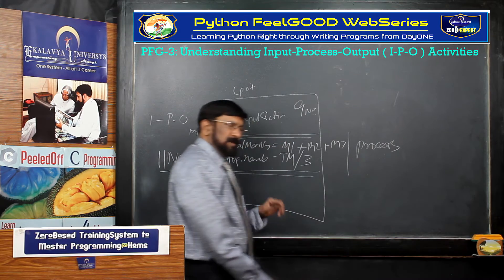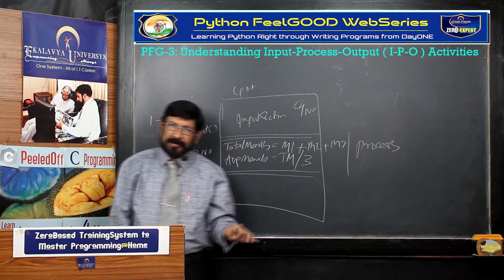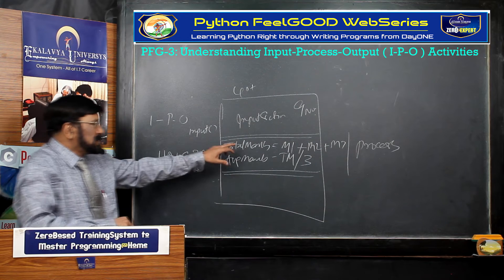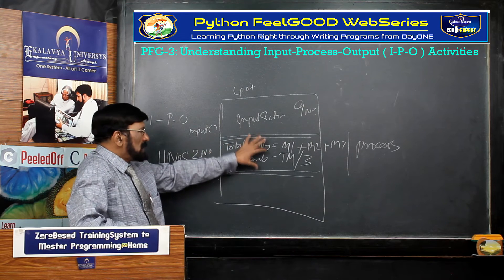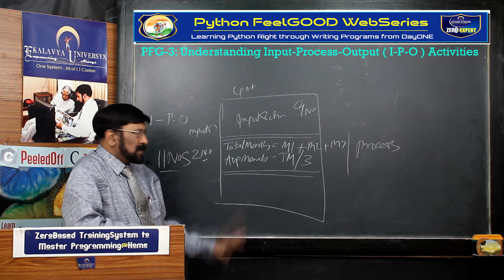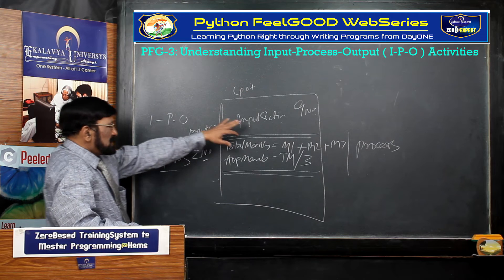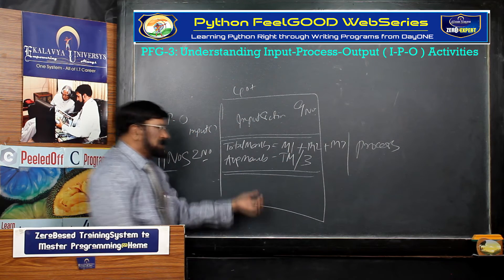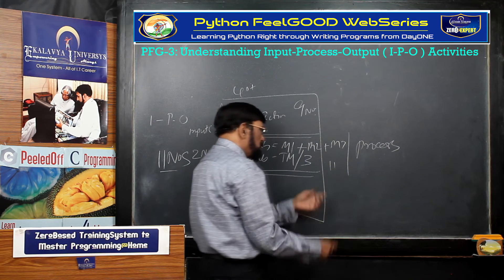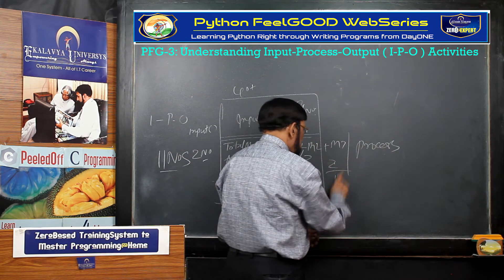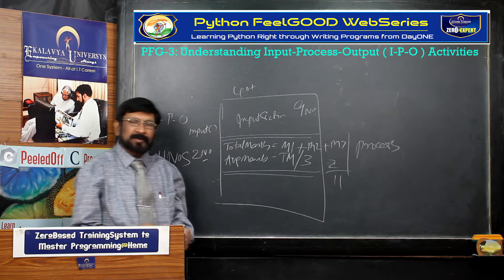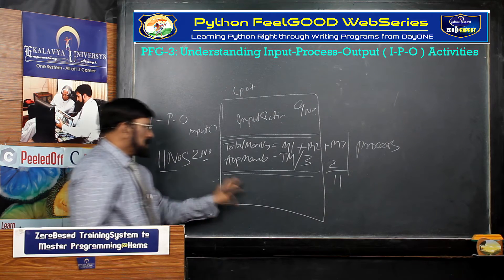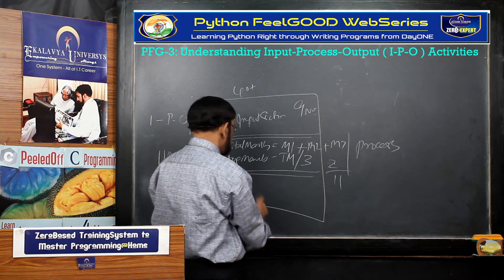Just like the August 1st Sunday example where you were processing to find September 1st, here your program is processing total marks. Nine data items you have given, your program calculates and produces 11 data items total — 11 data items required for output. This is the processing section.